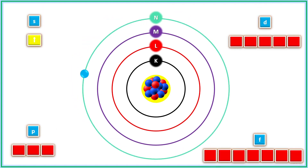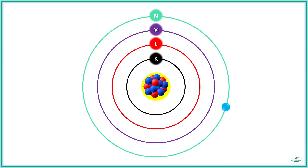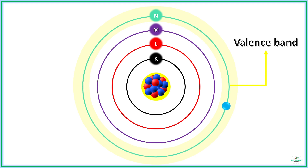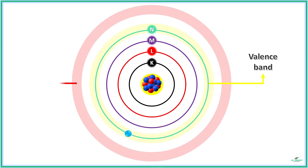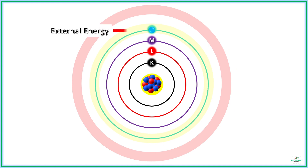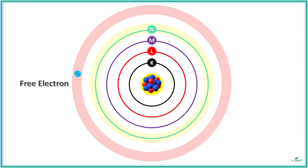What if the shells or orbitals are not completely filled with electrons? These shells form the valence band of the atom, and the electrons filled in the band are called valence electrons. There is a band next to the valence band called the conduction band. When an external energy is given to the electron in the valence band, it escapes from the valence band and reaches the conduction band, turning out as a free electron. These free electrons are responsible for electrical conductivity.